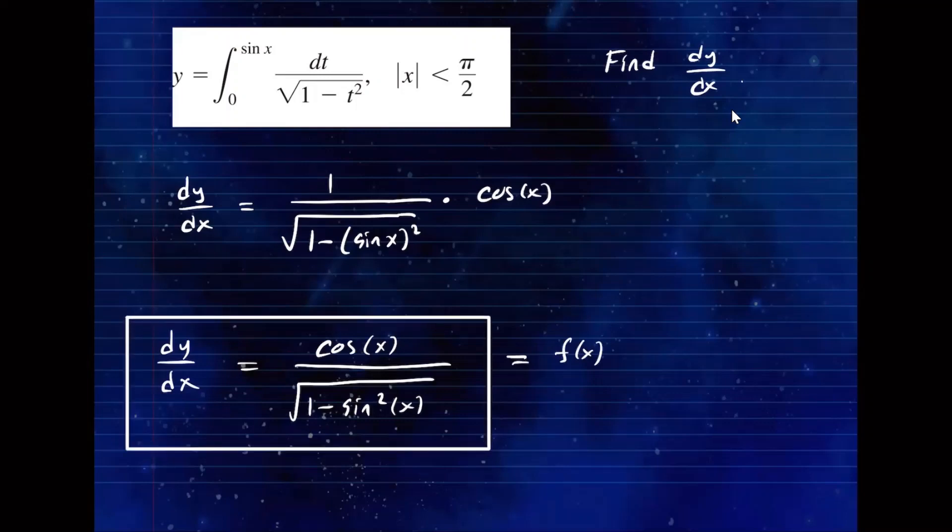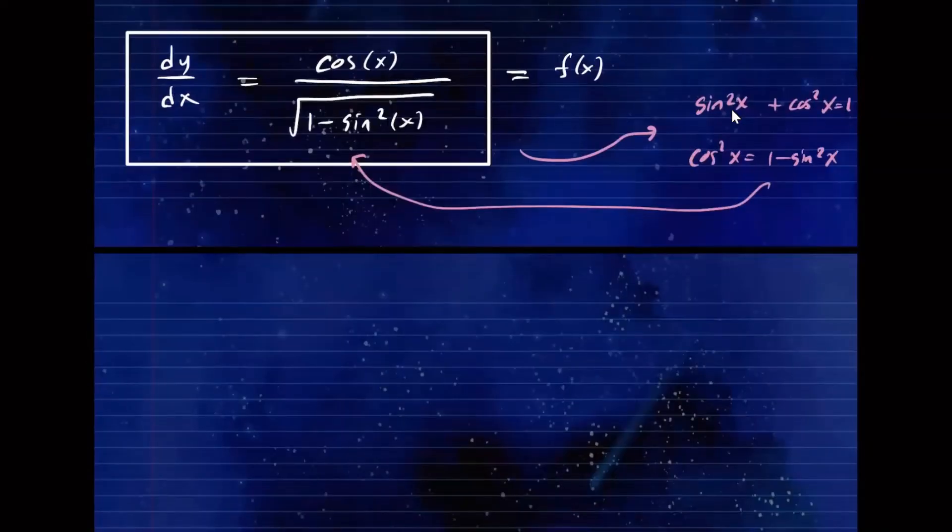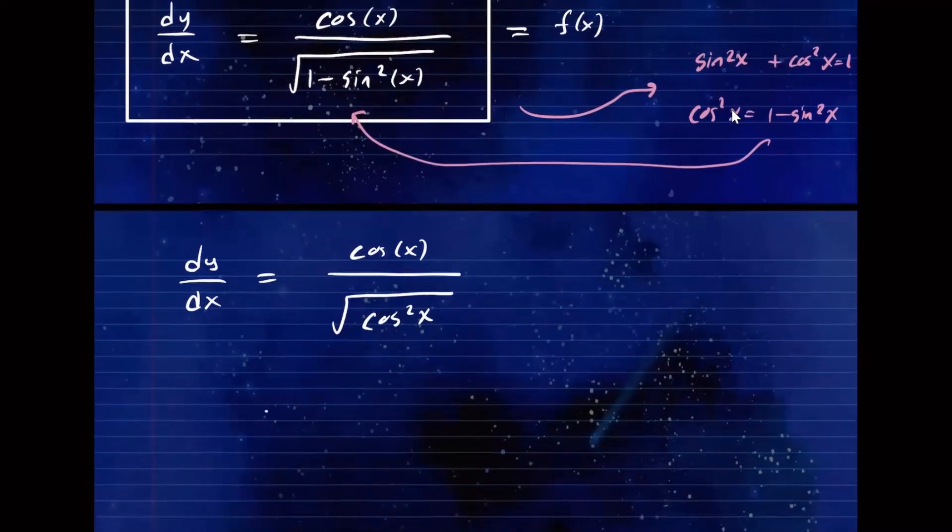Recall that sine squared x plus cosine squared x equals 1. So if you switch things around for cosine squared x, you get 1 minus sine squared x. So I can replace that in here and simplify this a little bit more. So this is going to turn out to be cosine of x over the square root of 1 minus sine squared, that's cosine squared of x. And then here, the square root and the square, we can cancel them out. So you have cosine x over cosine x, and that is equal to 1.